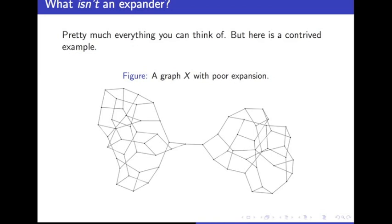Because we could take the set A to be, say, the vertices on the left-hand side. And then this set now has a very, very small boundary, consisting of only a single vertex. So the ratio of expansion is very, very tiny.